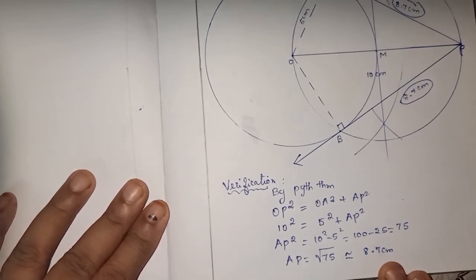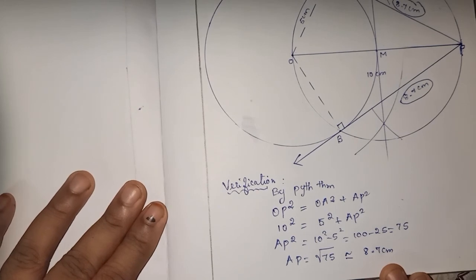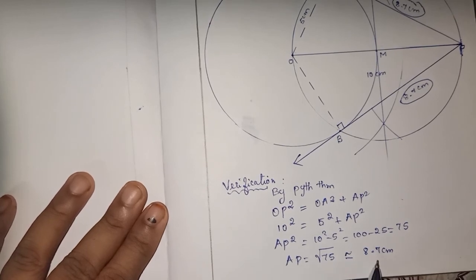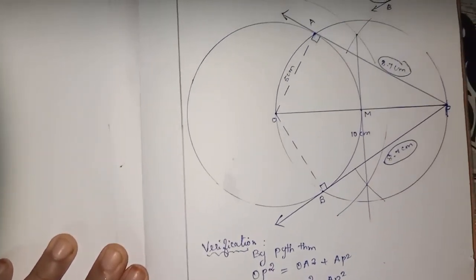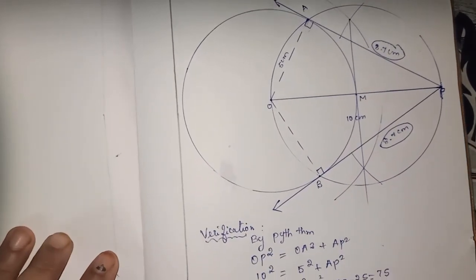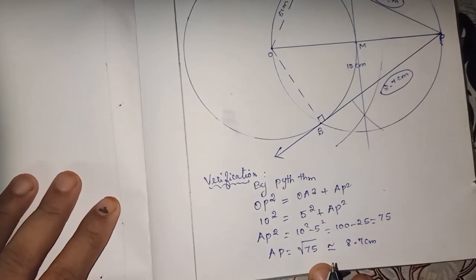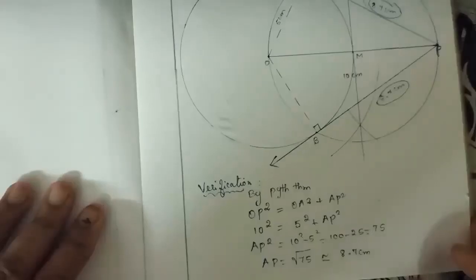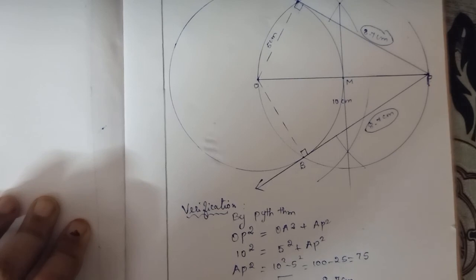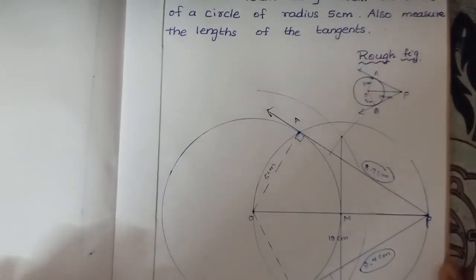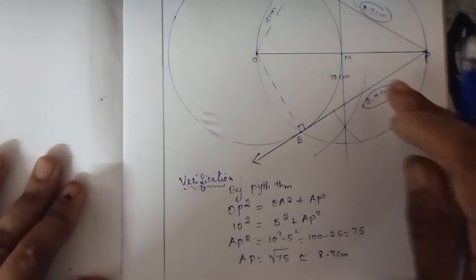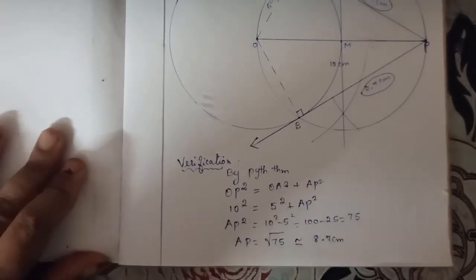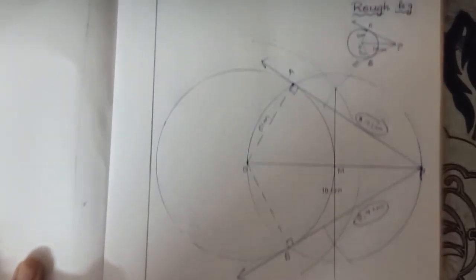The approximate value is 8.7 cm. You can check the square root - it is approximately equal to 8.7. That's all, we did the construction. Any doubts, you can put it in the comments. You can check it out. Thank you - like my channel, watch and subscribe. Thank you children.